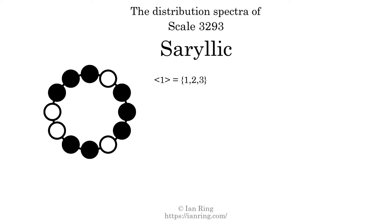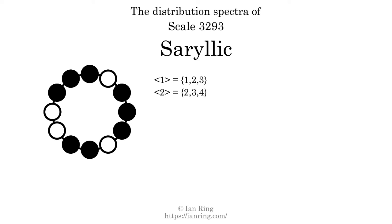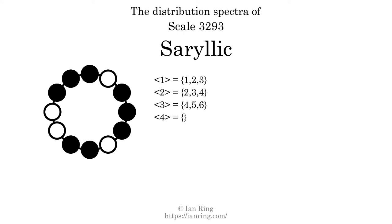The generic interval of 2 scale steps comes in 3 different specific interval sizes: 2 semitones, 3 semitones, and 4 semitones. The spectrum width of this generic interval is 2. The generic interval of 3 scale steps comes in 3 different specific interval sizes: 6 semitones and 7 semitones. The spectrum width of this generic interval is 2.